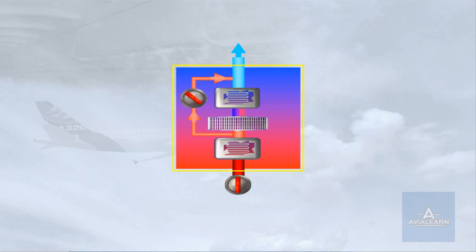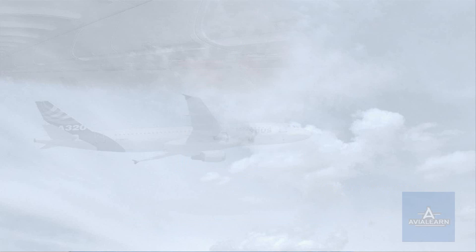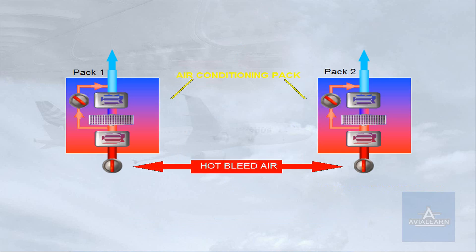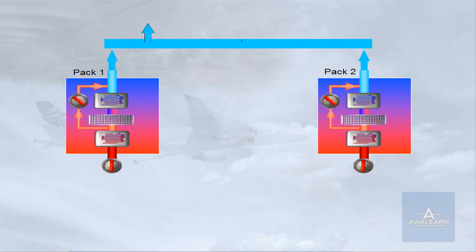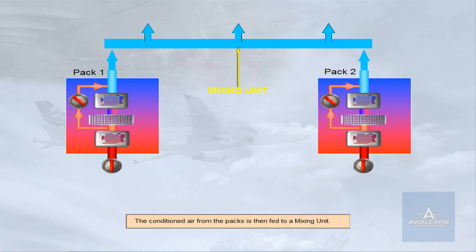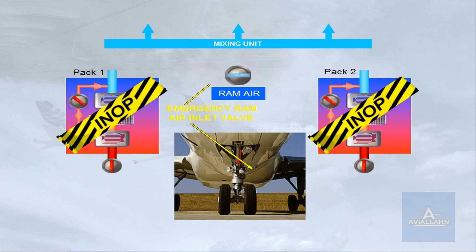To make things simpler, let's define the area within the yellow box as a pack. The two air conditioning packs operate automatically and independently to provide cool conditioned air. The conditioned air from the packs is then fed to a mixing unit. In case of failure of both packs, ram air is provided via an emergency ram air valve. We will look at the use of ram air in the failure cases module.